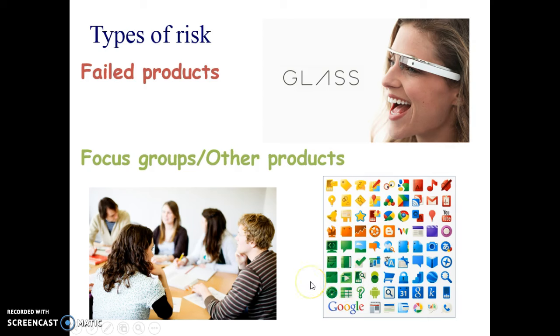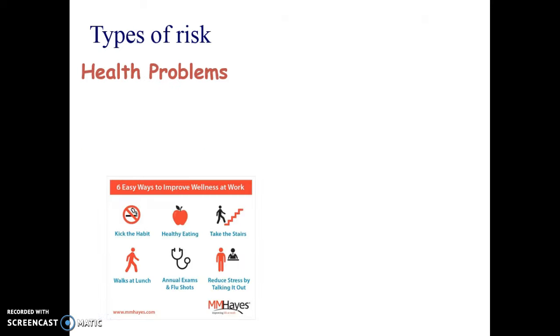Another approach is having a wide variety of products, so that if one product fails or doesn't take off, you've also got other products to rely on. Here are some of the different Google products that are out there, all colour coordinated.